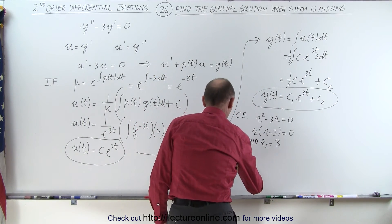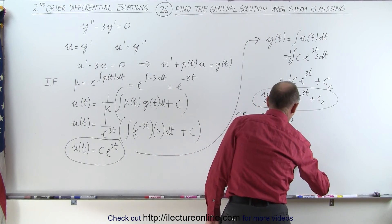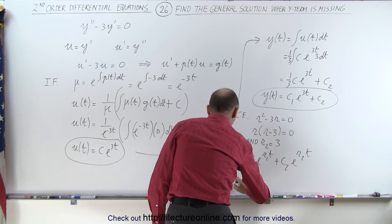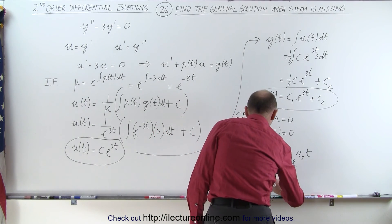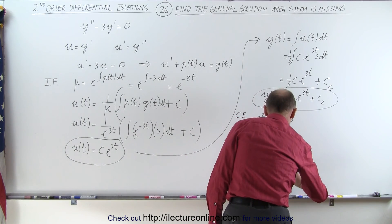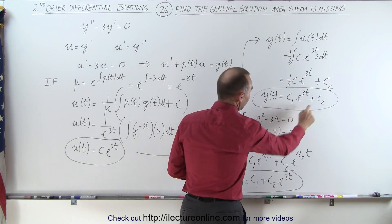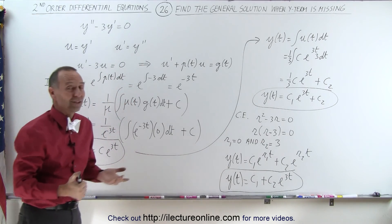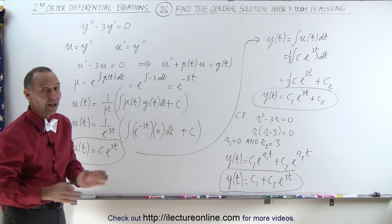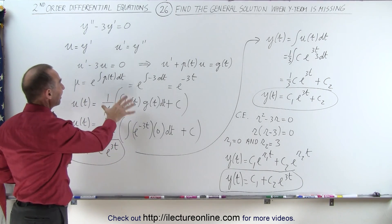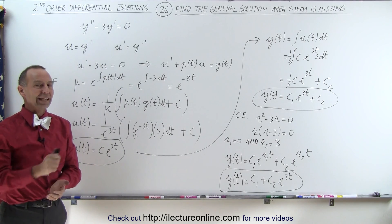Using these two roots, the general solution is y of t equal to c1 e to the r1 t plus c2 e to the r2 t. Plugging in: r1 is zero so e to the zero is one, and r2 is three, giving y equal to c1 plus c2 e to the three t. Notice we get the exact same result as before — the c's are just swapped, but c1 and c2 are any two constants. This shows the traditional characteristic equation method gives the same answer, but the substitution method also works when you have non-constant coefficients.